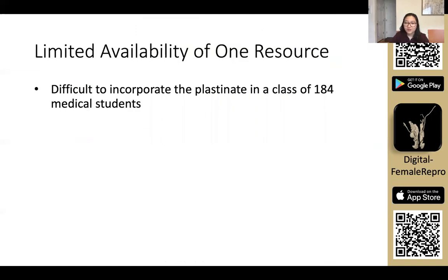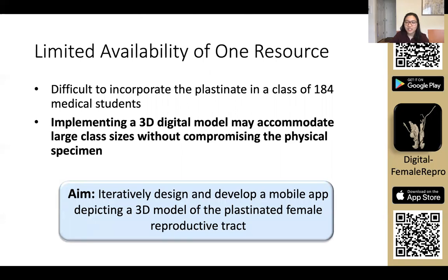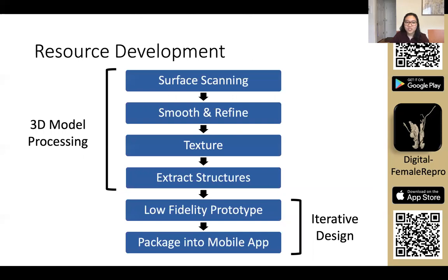Since we only have one plastinate of the female reproductive tract, it is very difficult to incorporate it in a large class size. As a result, implementing a 3D digital model may accommodate large class sizes without damaging the actual plastinate. The aim of our project was to iteratively design and develop a mobile app depicting a 3D model of the plastinated female reproductive tract. Development was divided into two parts: processing the 3D model, and iteratively designing the mobile app.